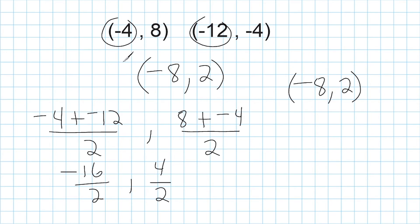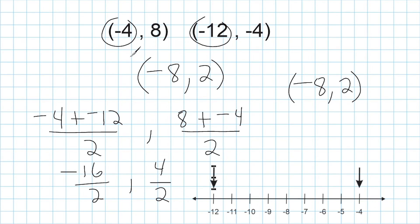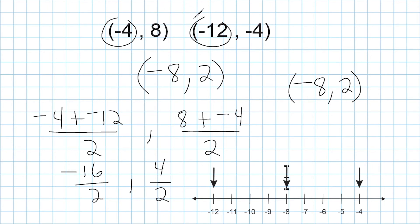Now when you have negative numbers involved, it might be a little bit tougher to do it mentally, but it's still something a lot of people can do. The way I think about it: we have negative 4 and negative 12, both to the left of 0. The distance between negative 4 and negative 12 is 8 — remember, distance is neither negative nor positive. So I take that distance of 8 and cut it in half, which is 4. Going 4 to the left of negative 4 gives negative 8, and going 4 to the right of negative 12 also gives negative 8. So I know negative 8 is right in the middle on the number line.